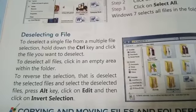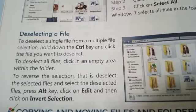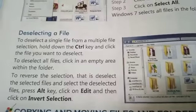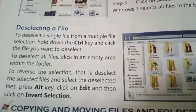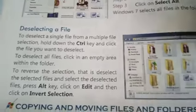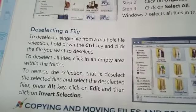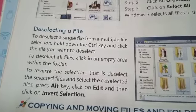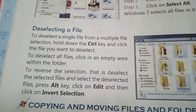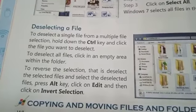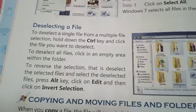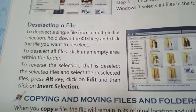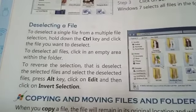To deselect a specific file, hold down the Control key and click on the file you want to deselect. To deselect all files, click in an empty area within the folder — all selected files will be deselected.